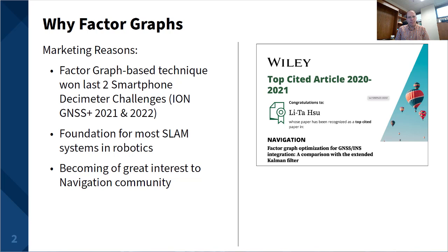And the navigation community is seeing a dramatic increase in factor graph interest. For example, a paper comparing factor graphs and extended Kalman filters was one of the top-cited articles in the Navigation Journal, as shown by the picture on the screen.